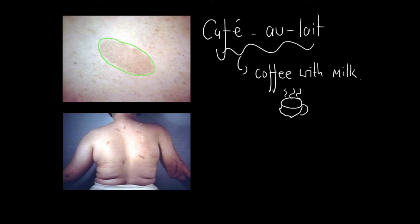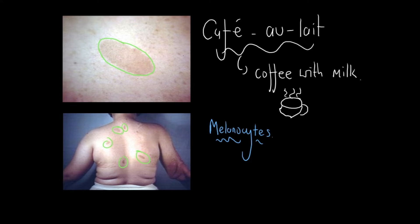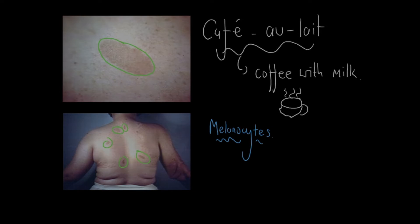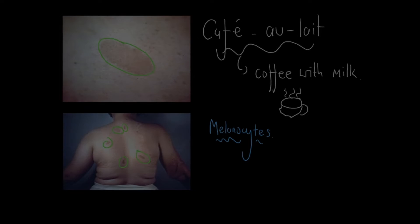We've got at least five café au lait spots here, so I'm just going to outline those so they're obvious for you to see. Café au lait spots are flat brown pigmented spots which come from the pigment-producing cells called melanocytes. Now that you've had a good look at what the spots look like, let's move on and see what conditions they can be found in.